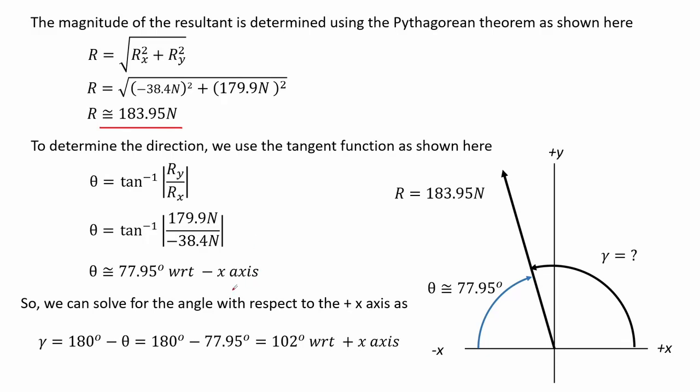We have to be careful here in regards to the orientation, so we look at the image. The angle theta for the tangent function is measured with respect to the negative x axis. Solving for the angle theta, we get that it is about 77.95 degrees with respect to the negative x axis.